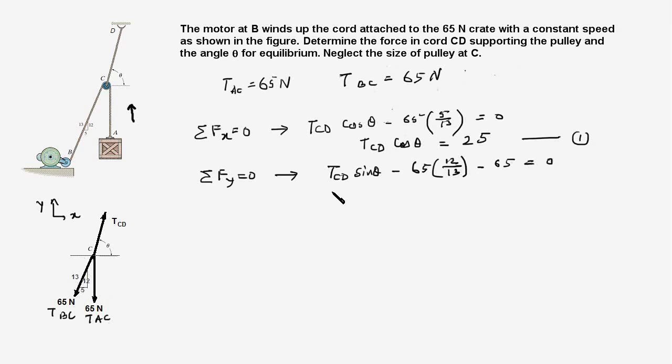So 65 × 12/13, and TAC is 65, so minus 65 equals zero. This simplifies to TCD sin theta equals 65 plus 60, which equals 125. This is equation two.